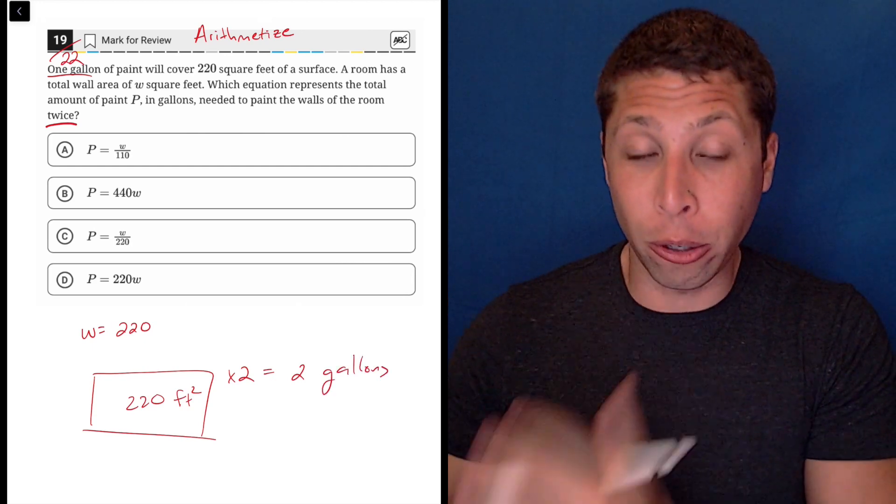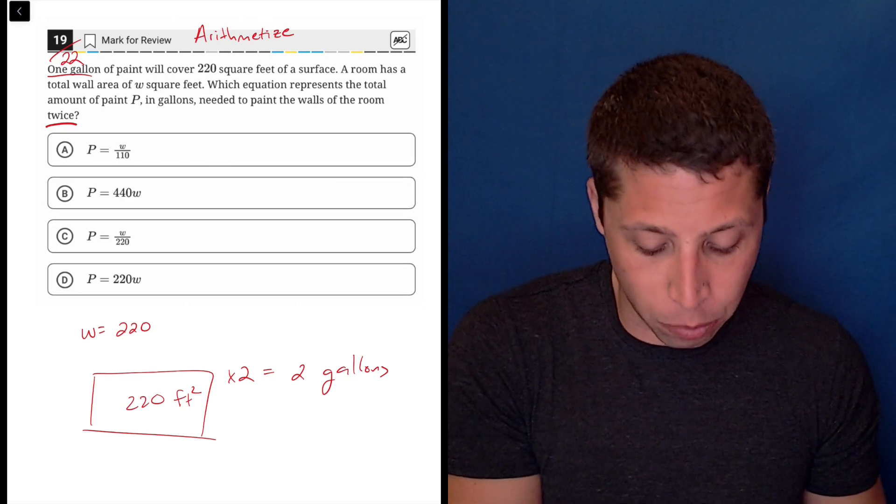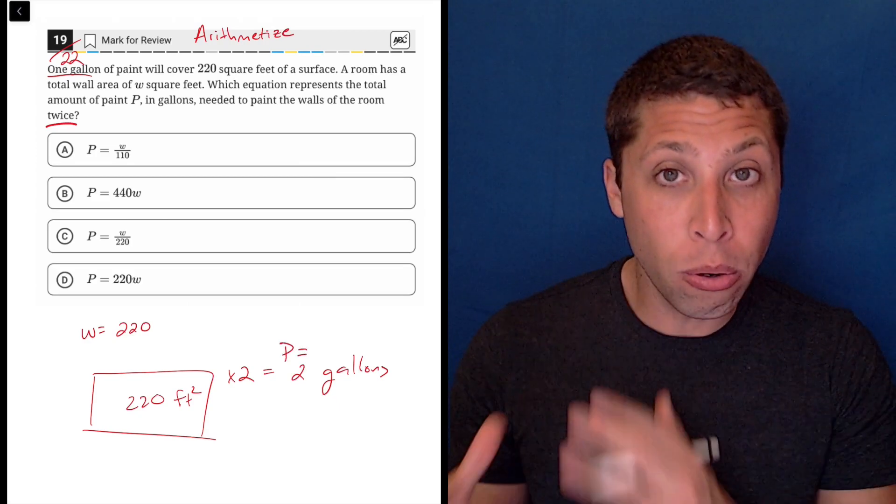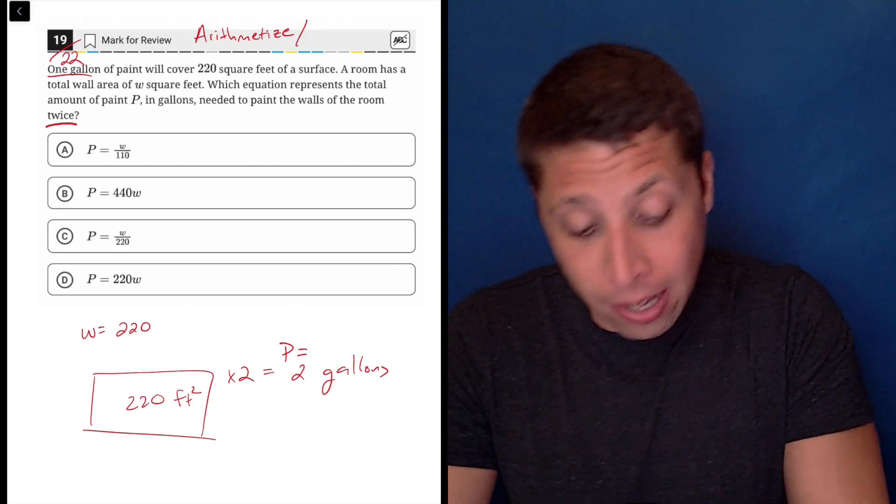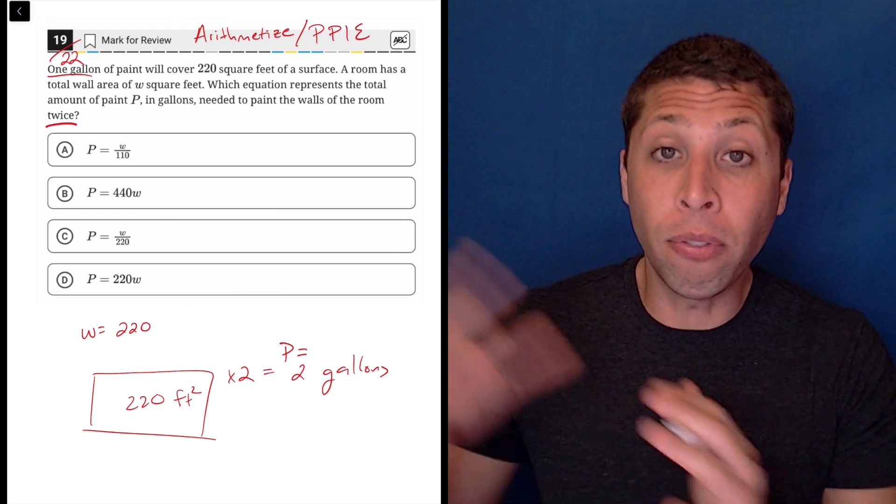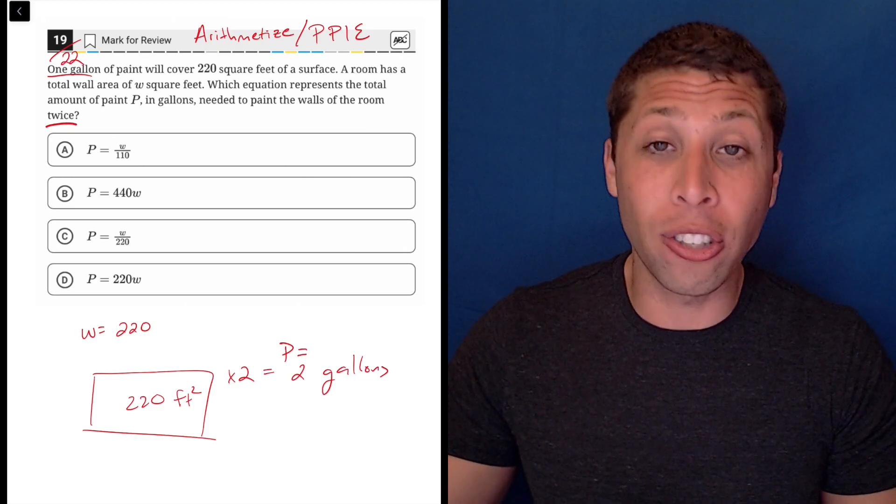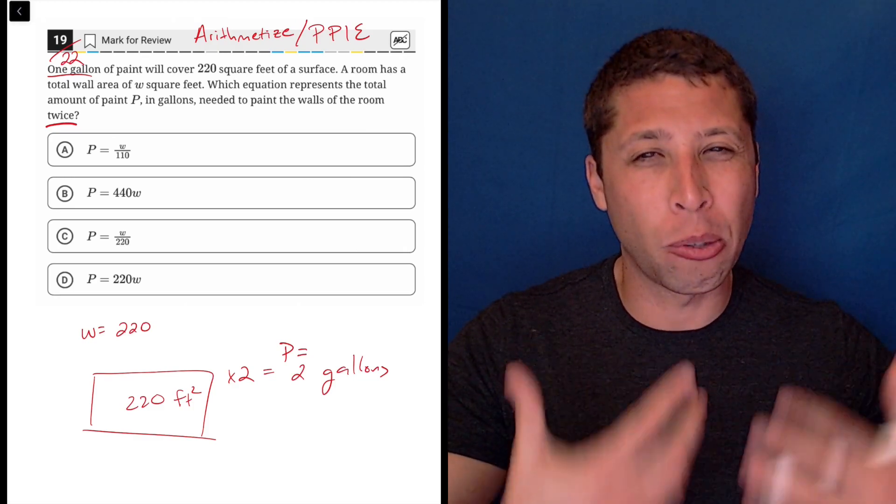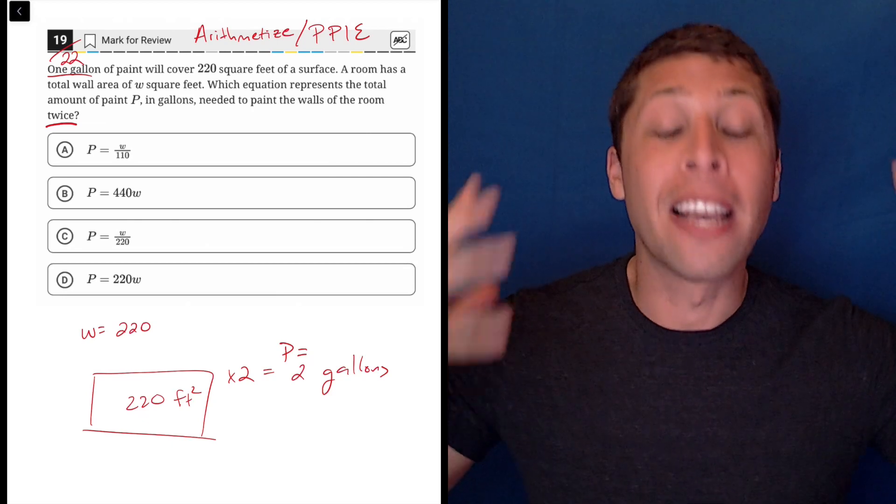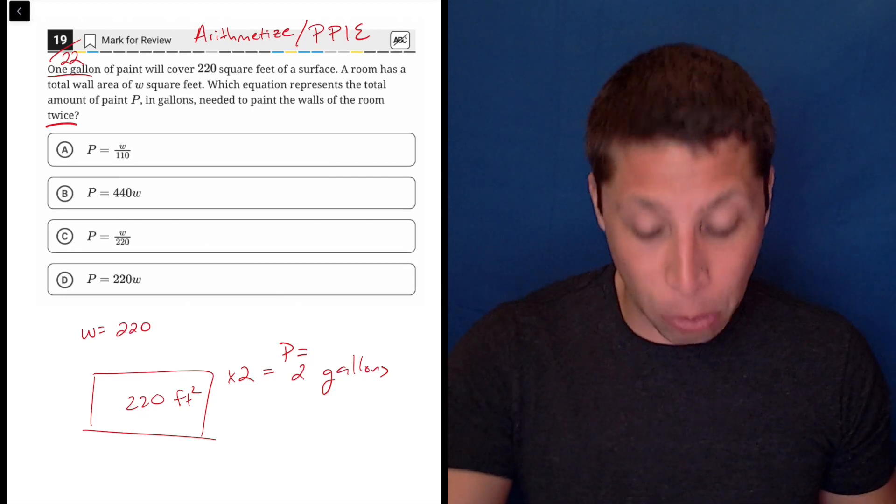So basically, we painted a hypothetical room and what it's giving us is a point that we can then plug into these equations that we're given. So the W is 220 and the P is two. That's my point and that kind of gets us back to my favorite strategy, plug points into equations. So arithmetize is a version of plug points into equations, but it really only applies when we are given equations but not points. It usually happens when we have this story and it's hypothetical. Stop making it hypothetical. Don't think about it conceptually. Pick up a value and test it out. So let's see if our point is going to help us with these equations.